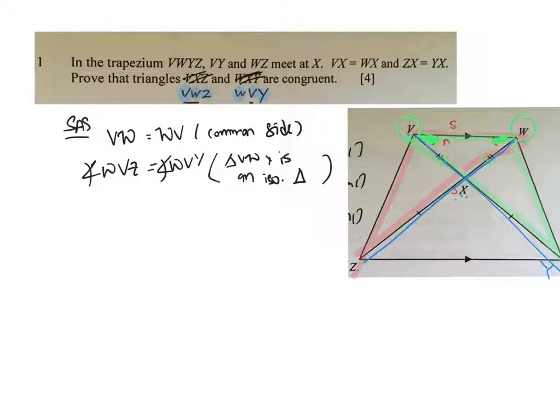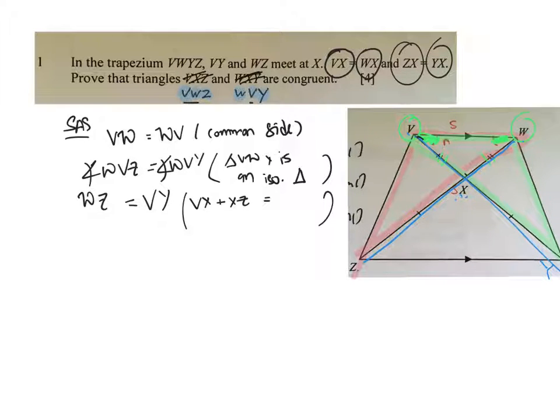The last S: we know that WZ is actually equal to VY. Again, the reason is not given, but rather you need to explain further. How do you explain? In the question, we know VX is equal to WX and ZX is equal to YX. Therefore, the sum of them—WX plus XZ must equal VX plus XY. That will be the formal reason.